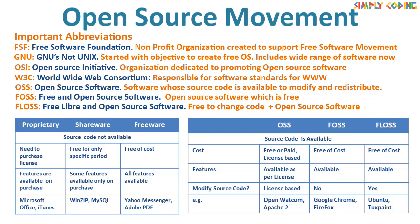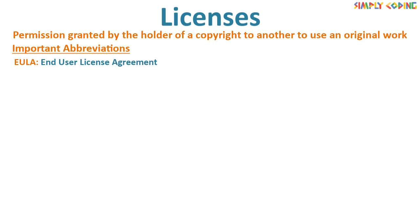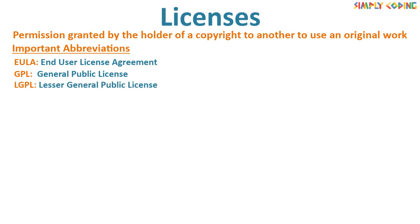Let's see what licenses are next. A license is permission granted by the holder of a copyright to another to use an original work. Some important abbreviations: EULA stands for End User License Agreement. GPL stands for General Public License. LGPL stands for Lesser General Public License. We will see the difference between these two shortly.